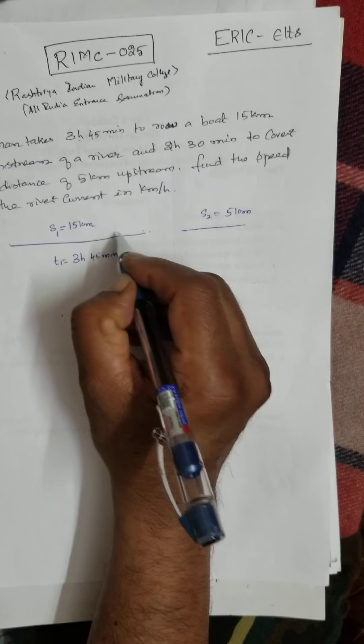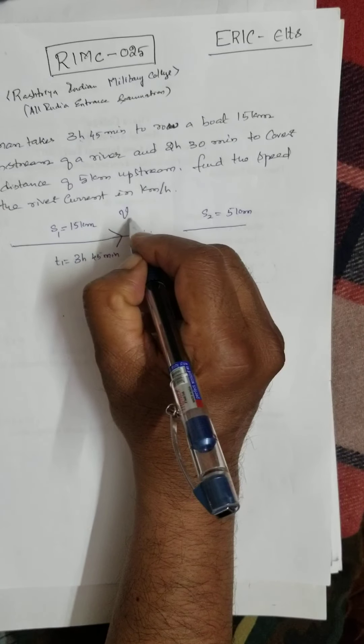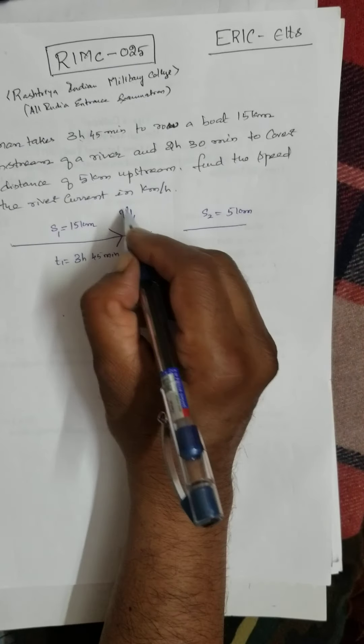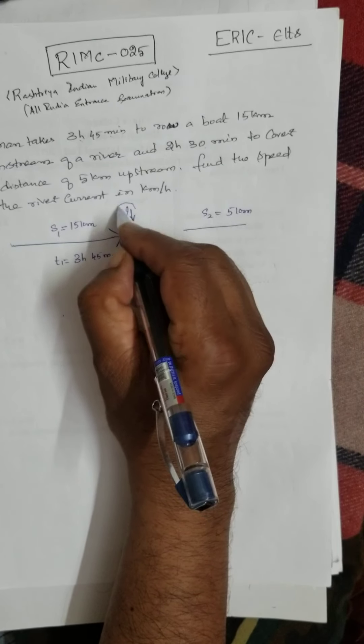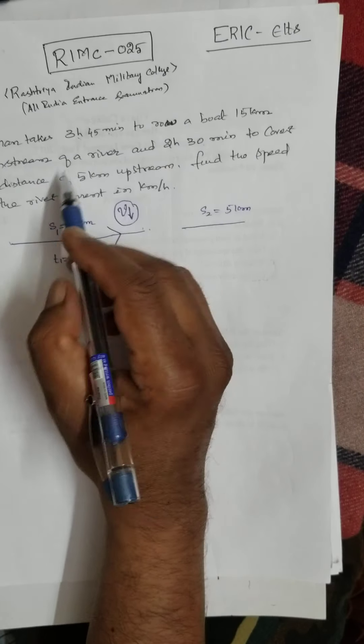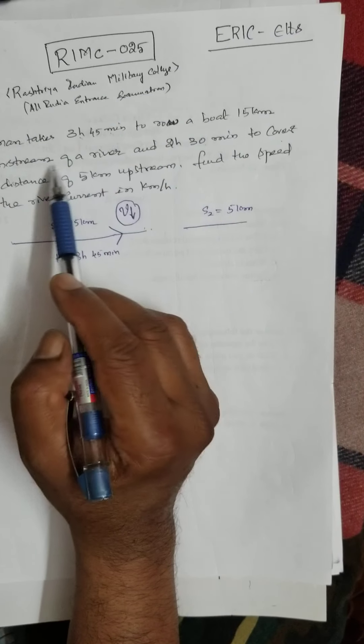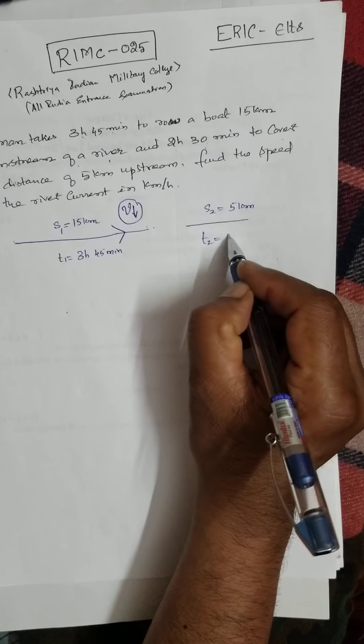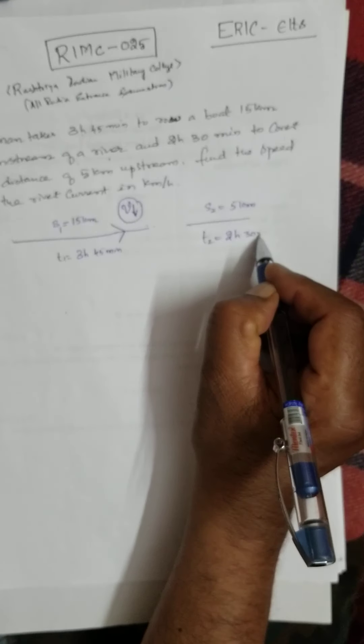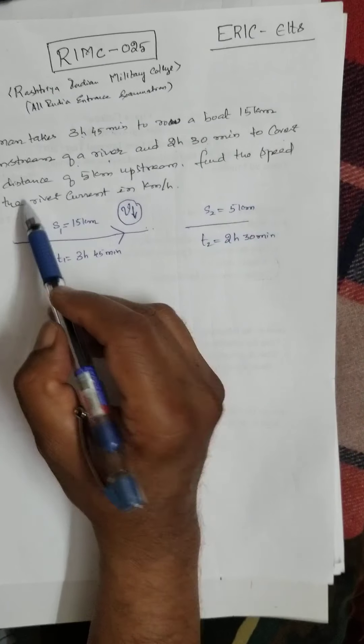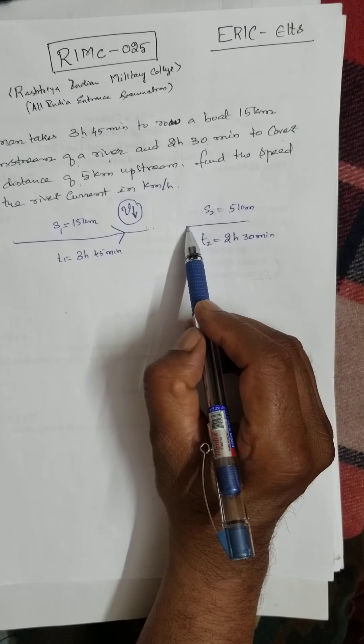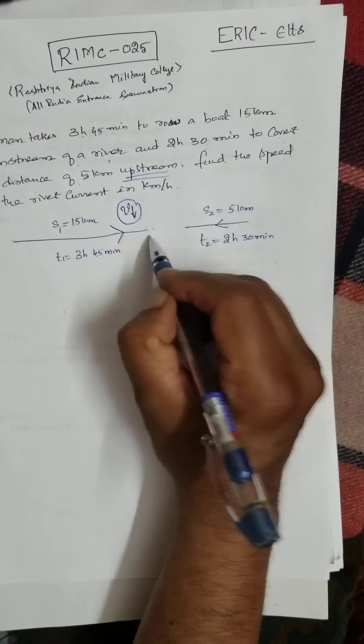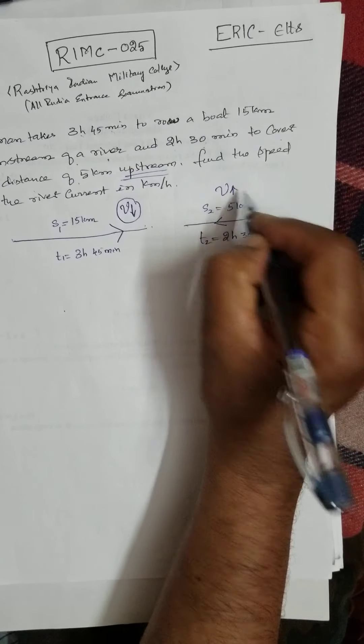Boat in downstream. Downstream means velocity of the downstream, right? Velocity of downstream. You have to this direction. And here, 2 hours, 30 minutes. That means, T2 is what? 2 hours, 30 minutes to cover the distance of 5 kilometers in the upstream. Upstream means this direction. That means velocity of the upstream.